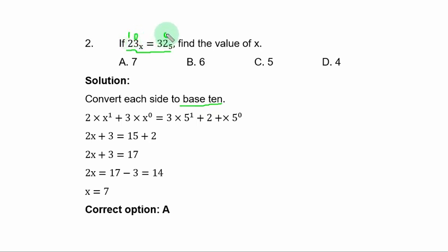Position of 3 is 0 and 2 is 1. So, you multiply 2 by x to the power of 1, the position of 2. Plus 3 times x to the power of 0, equal to 3 times 5 to the power of 1, plus 2 times 5 to the power of 0. So, x to the power of 0 is 1, plus 3 is 3, equal to 15, plus 2.